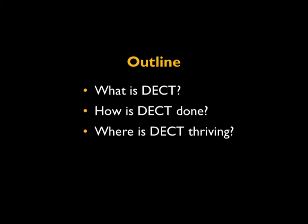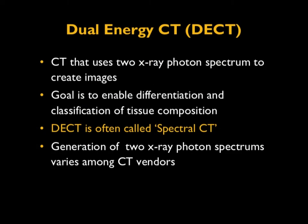In principle, dual-energy CT means a CT that uses two x-ray photon spectra to create images. The main goal is to enable differentiation and classification of tissue composition — basically, to identify subtle differences in tissues based on their attenuation properties by using two different energies. Dual-energy CT is often called spectral CT.